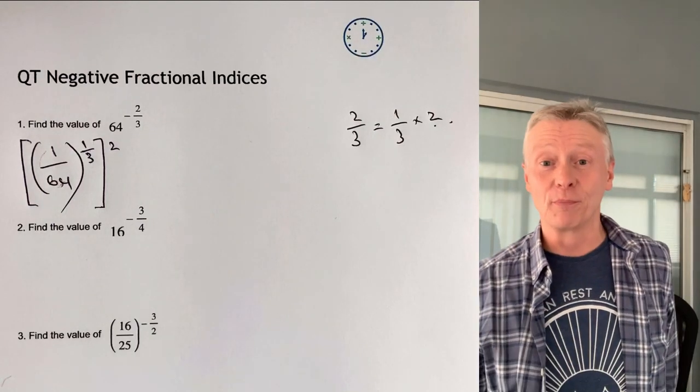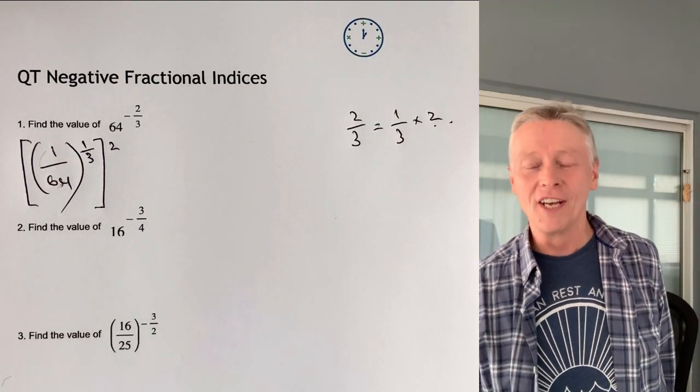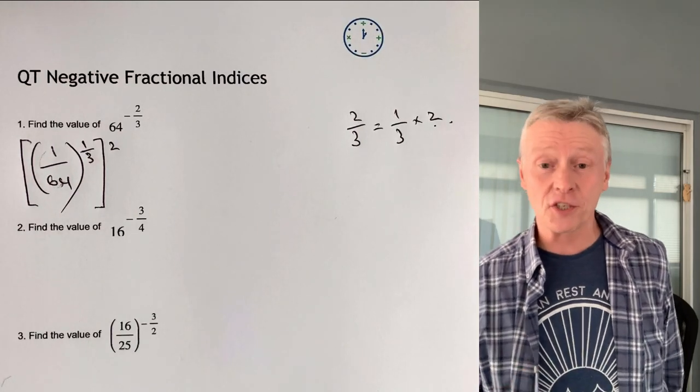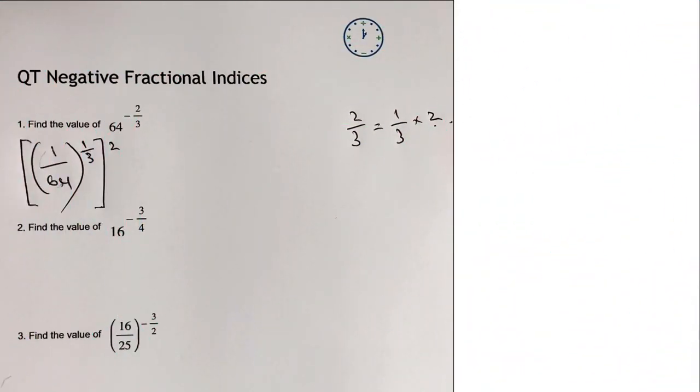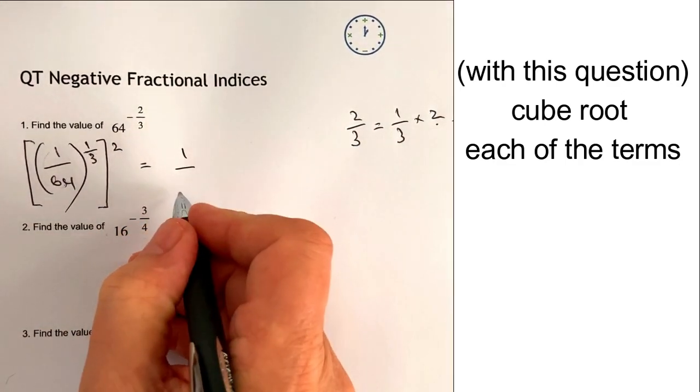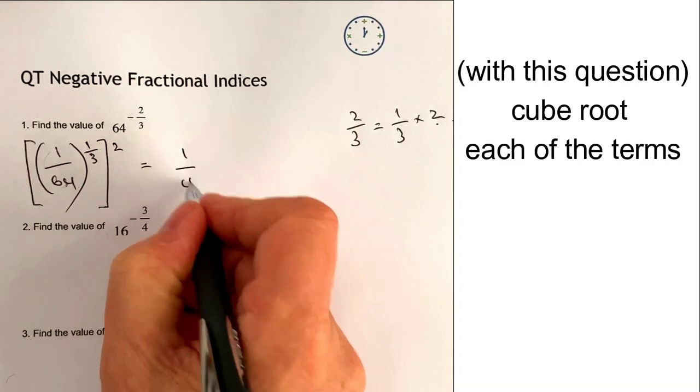So I've got the cube root of 1 and I've also got the cube root of 64, so I can look at each of those individually and then when I finish that I can square each of the terms individually. So the cube root of 1 is going to be 1 and the cube root of 64 is going to be 4.